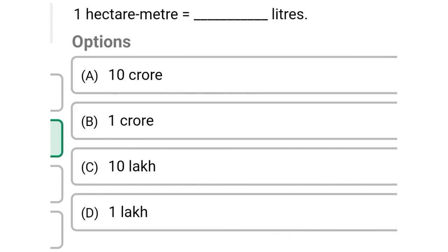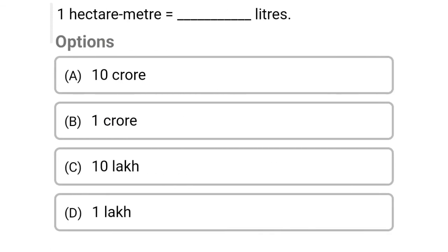Next question: one hectare meter is equal to how many liters? Option A: 10 crore, Option B: one crore, Option C: 10 lakh, Option D: one lakh. The correct answer is one crore. So one hectare meter is equal to one crore liters.